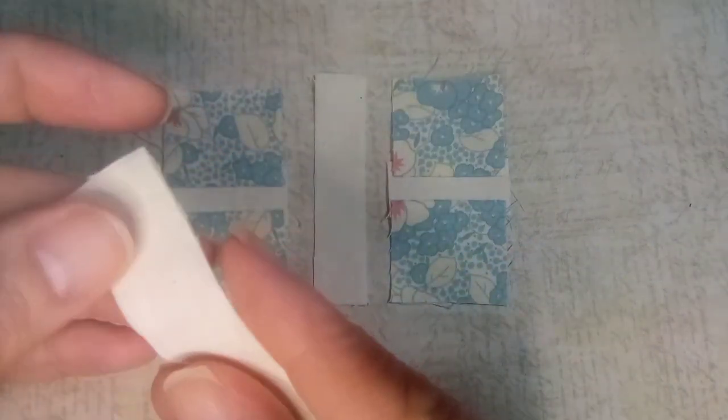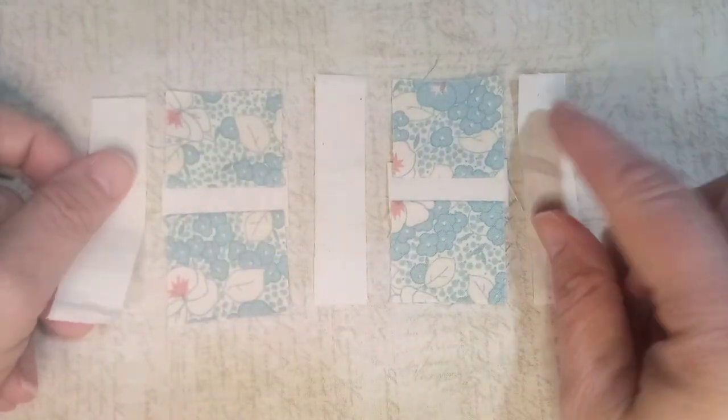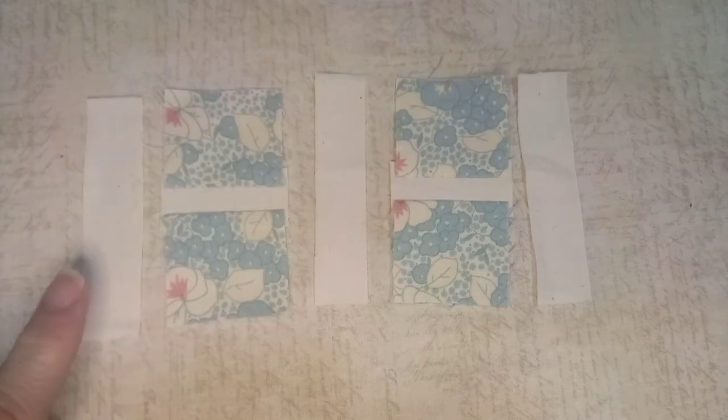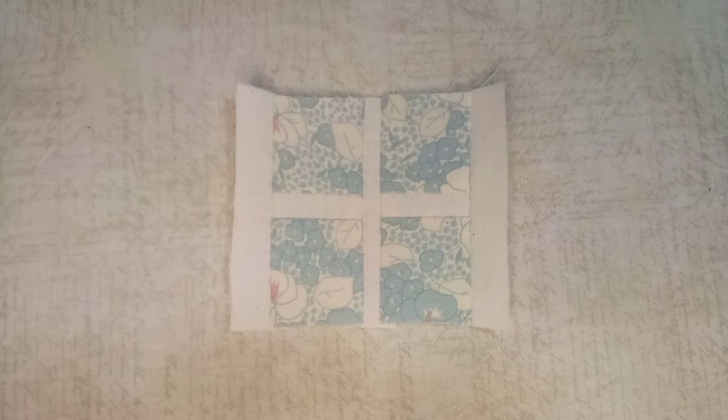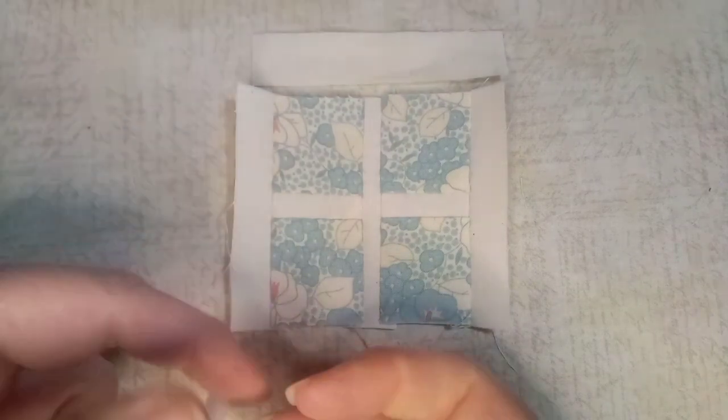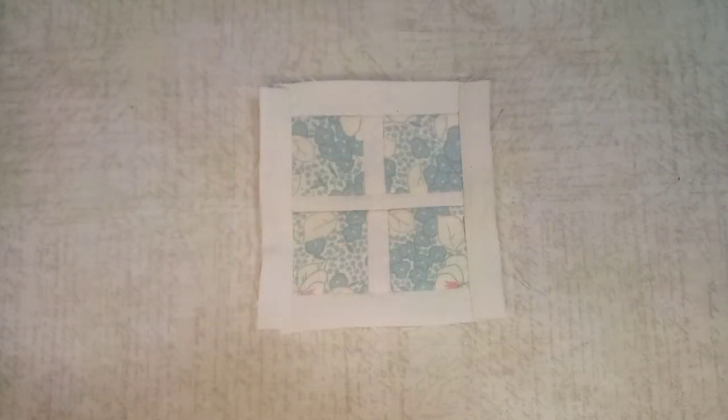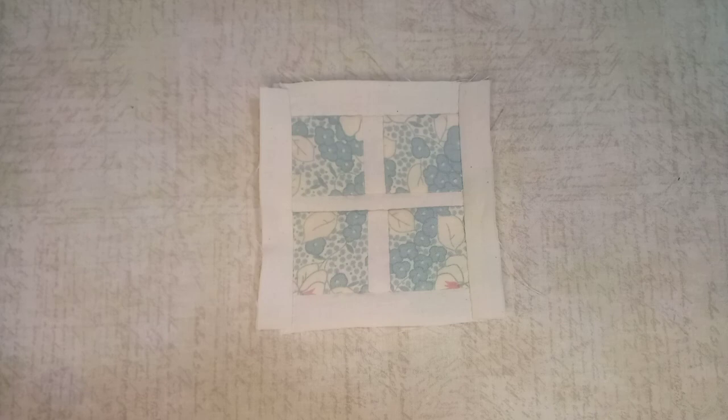I have the center square sewn together, and now we'll be sewing these three strips together on either side of these squares. The very center of the block is now all sewn together.